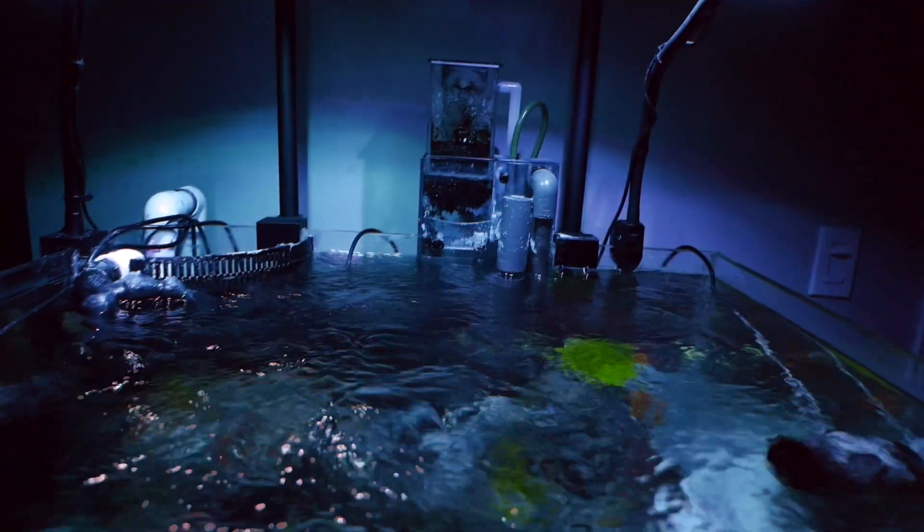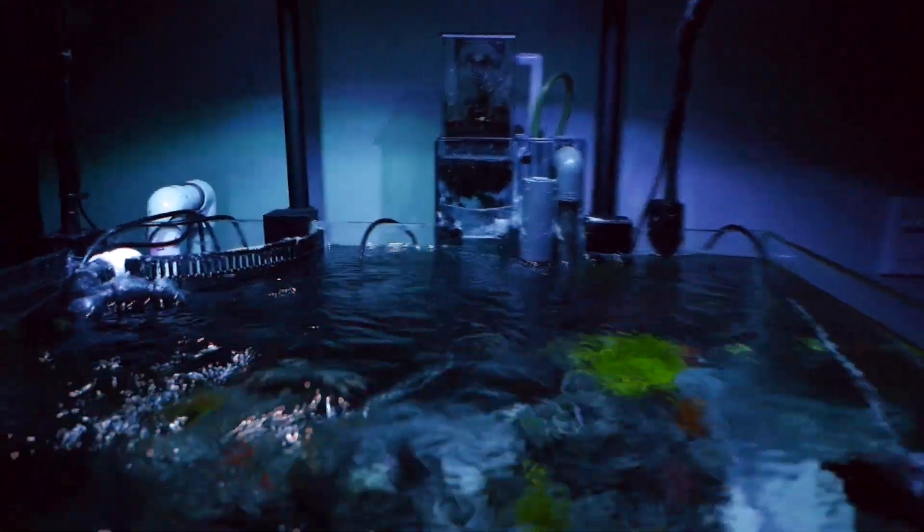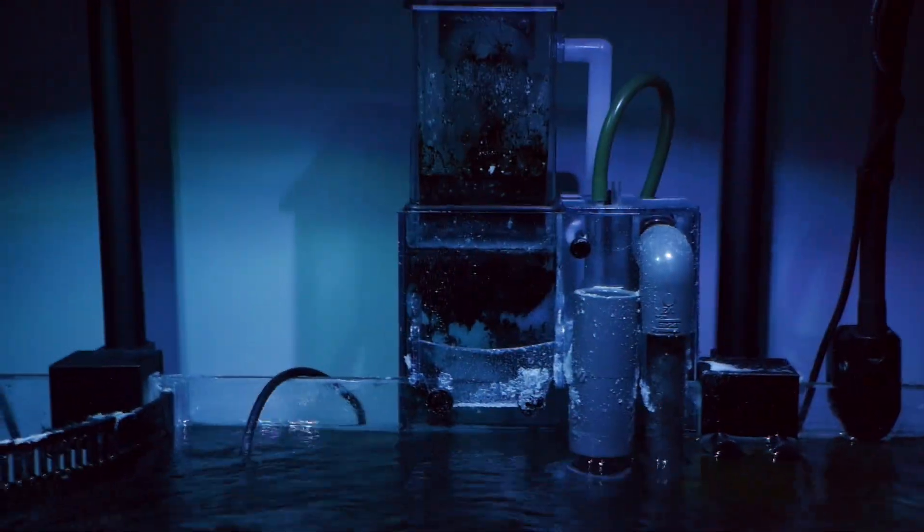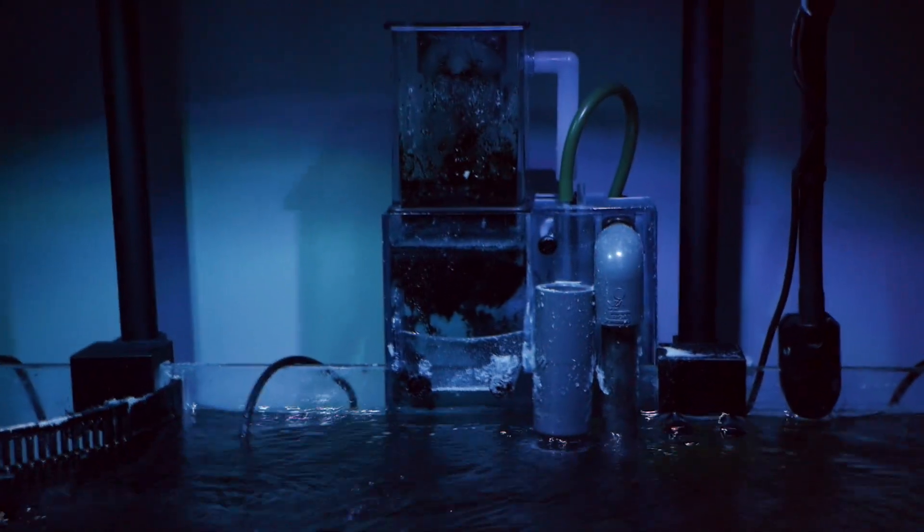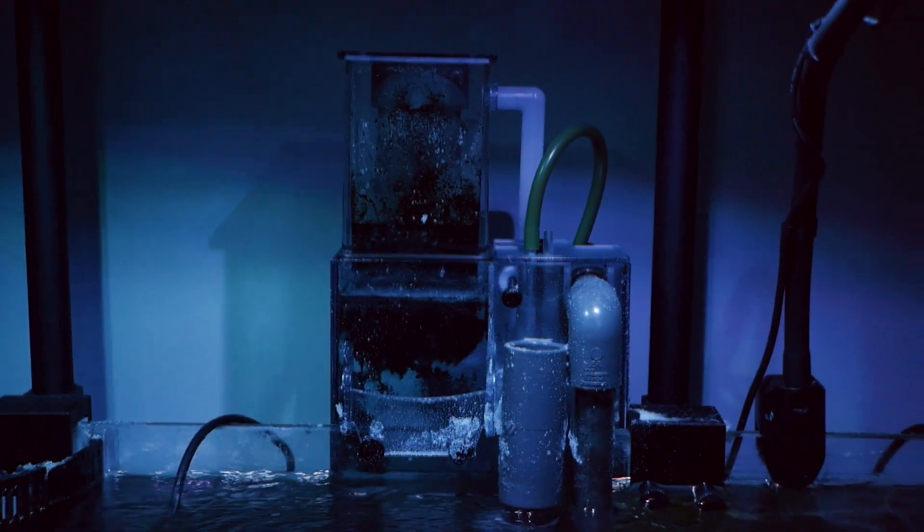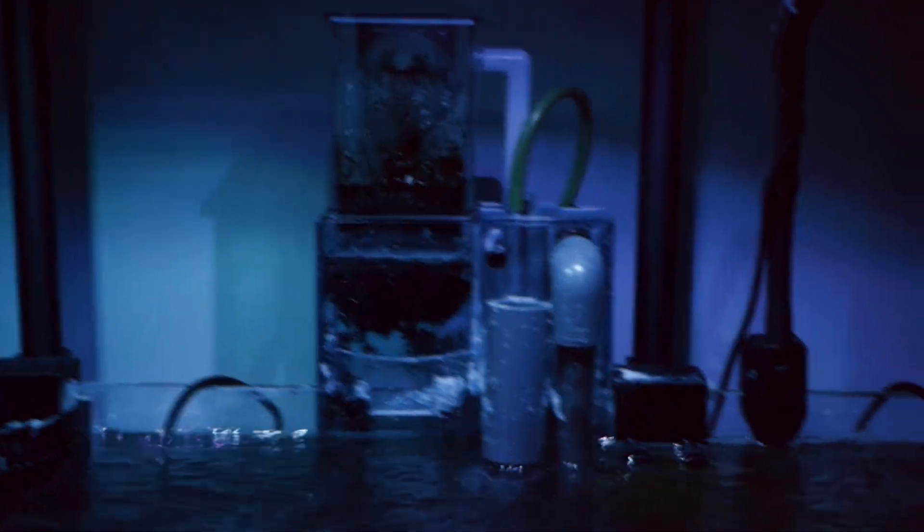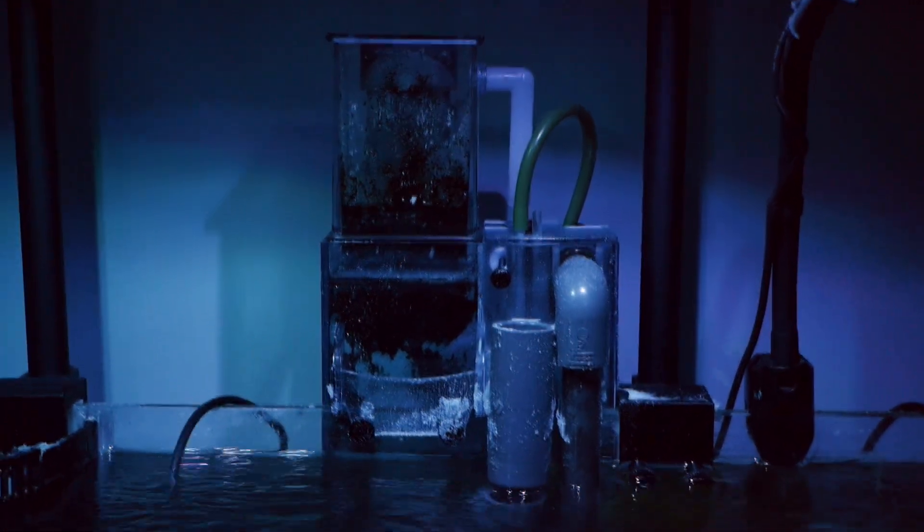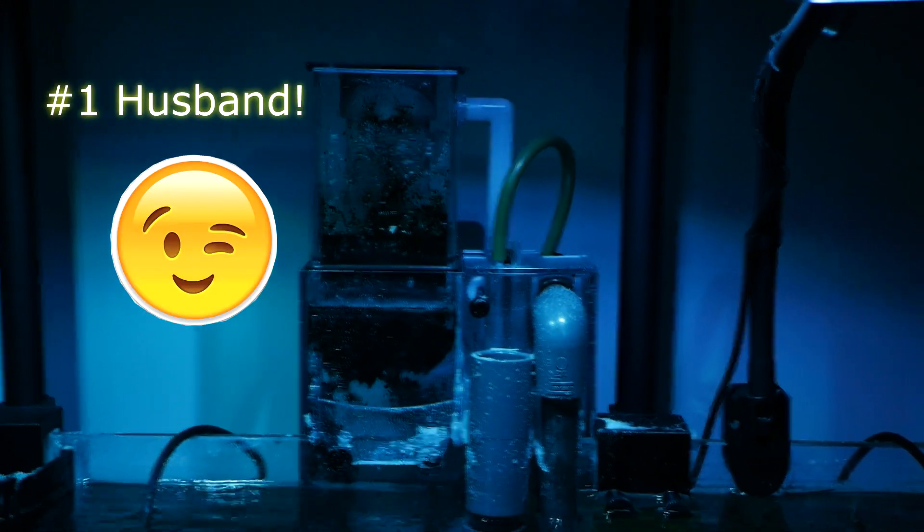So behind these lights, you're also going to notice that I have an HOB skimmer. This is an Aquamax HOB 1.5. And the reason that I have a hang-on-back skimmer instead of a skimmer in my sump is because I built my tank too low because I am a good husband.